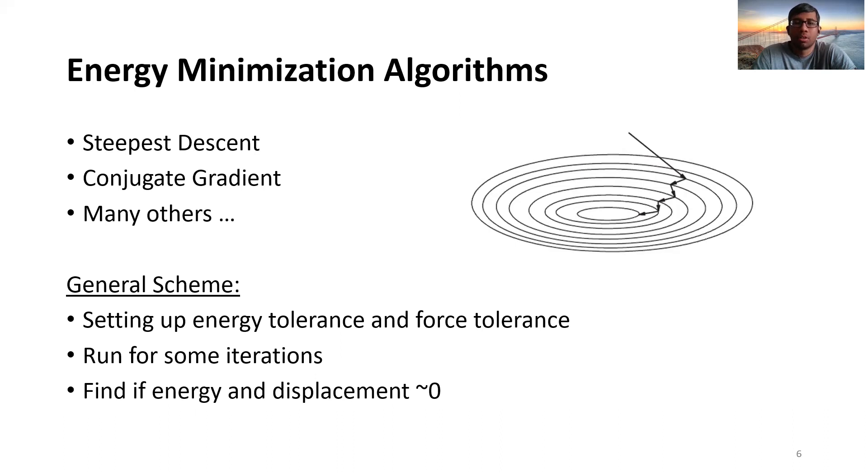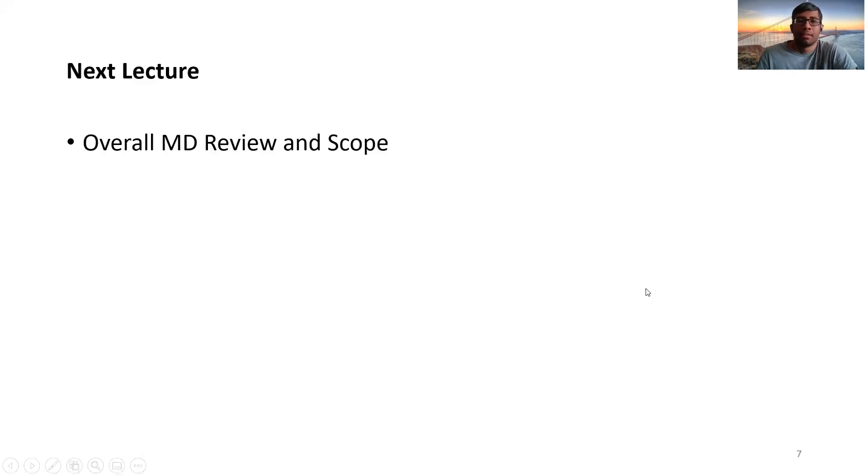To begin the system to run the actual MD simulation and to find whether the energy and displacement of the system is close to zero, it will run for some iterations and try to validate this set of conditions to get to the initial energetically viable condition. And that's how you run an energy minimization of an MD simulation.